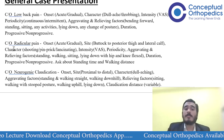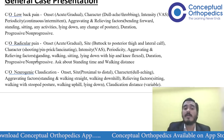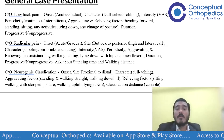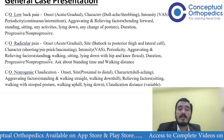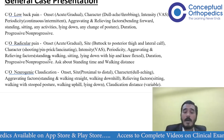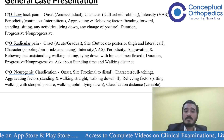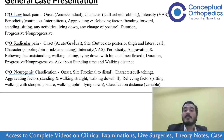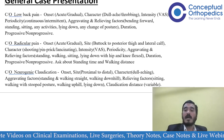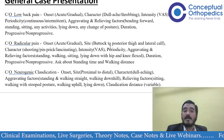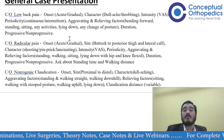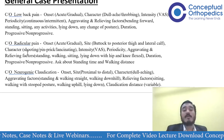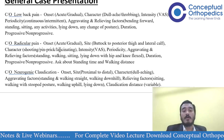The second common complaint is radicular pain. Ask about the onset — whether it was acute or gradual. In PIVD, the classic history is that it starts with lower back pain, the back pain settles, and then the patient develops leg pain. The side of the pain is important — whether it is in the buttock, posterior thigh, lateral calf, or calf — as this helps identify the possible dermatome involved.